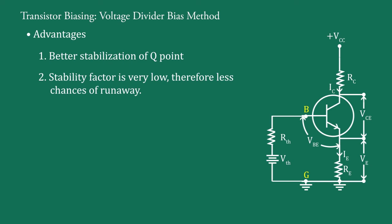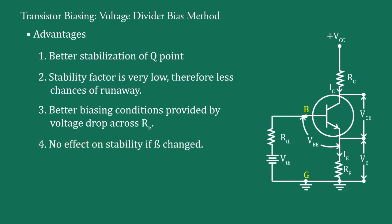It means self-destruction of the transistor is reduced. Three, better biasing conditions provided by voltage drop across RE. And fourth one, no effect on stability if beta changed. That means we replace the transistor and change the beta, then there is no effect on the stability of Q point.